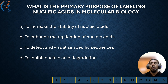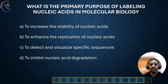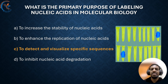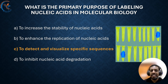Let's see the first question we have today. What is the primary purpose of labeling nucleic acid in molecular biology? The correct answer is to detect and visualize specific sequences. Labeling nucleic acids helps researchers identify and see specific DNA or RNA sequences. This process is important for many molecular biological applications.